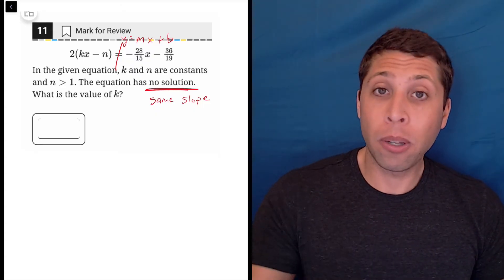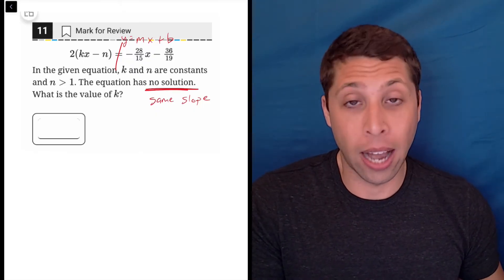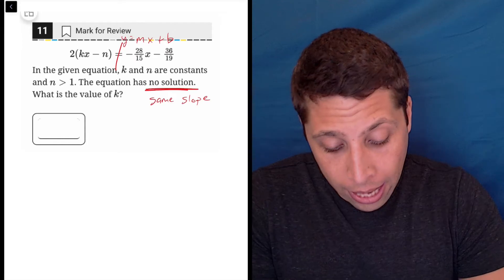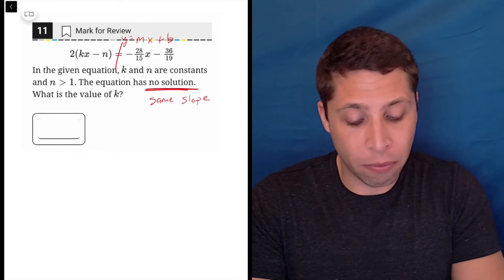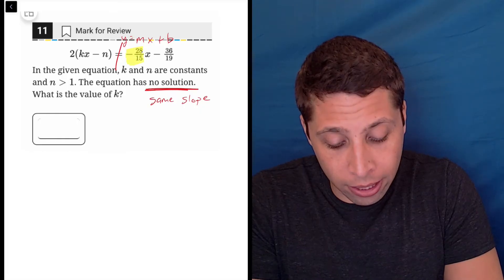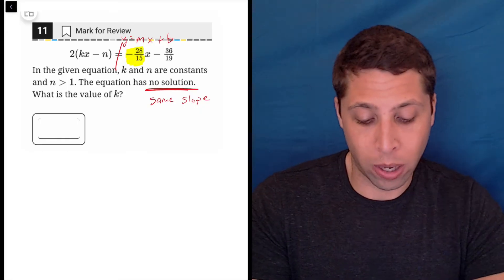So basically, I'm just like, what's the slope of each of these things? That's kind of what I'm going to solve for. And on the right side, like I said, since it's already in y equals mx plus b format, I can just kind of look at it and say, yeah, the slope is going to be negative 28 over 15.